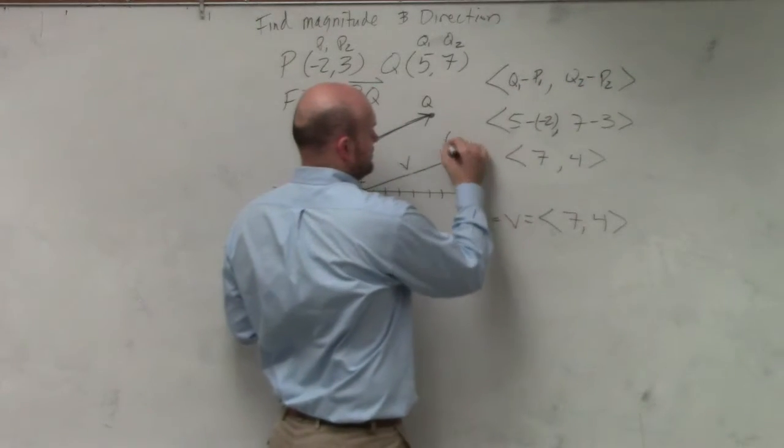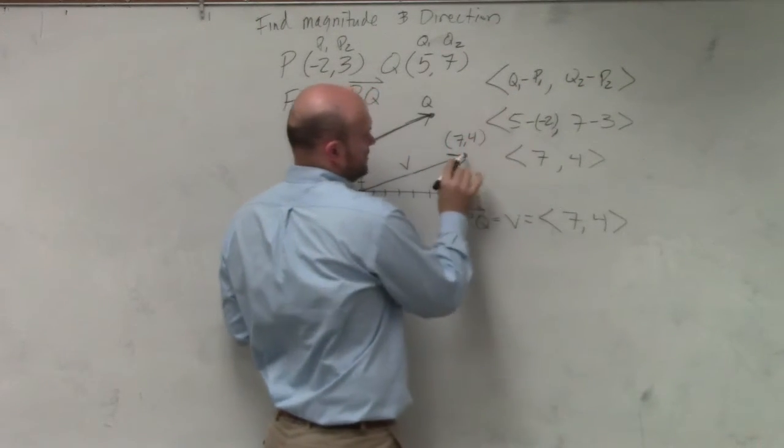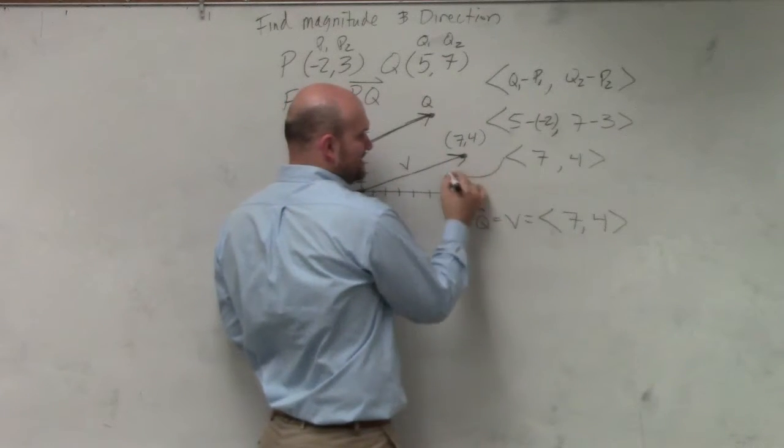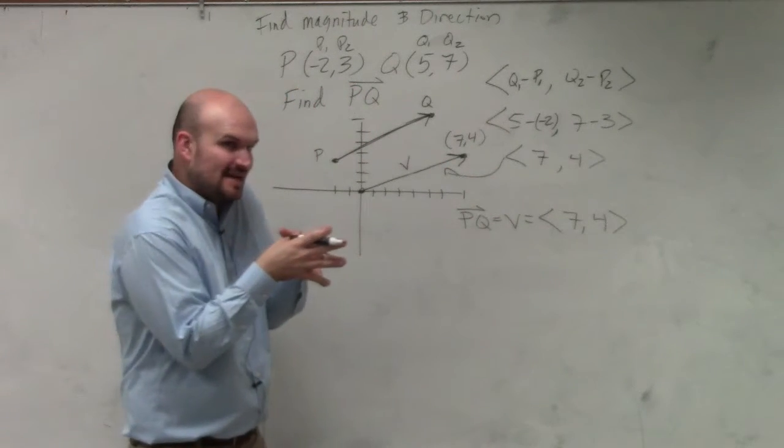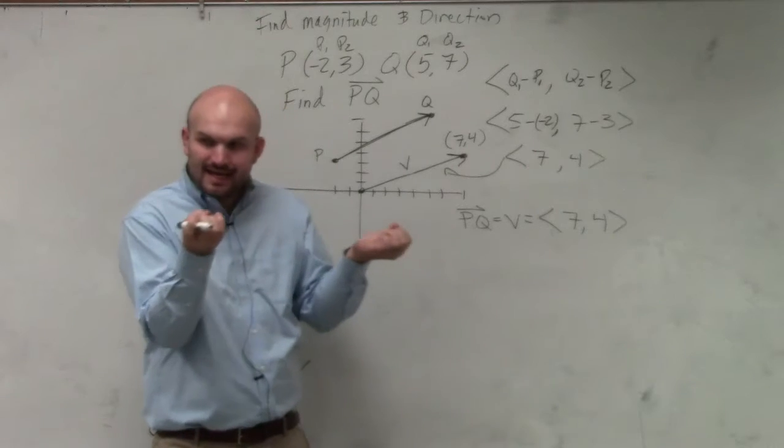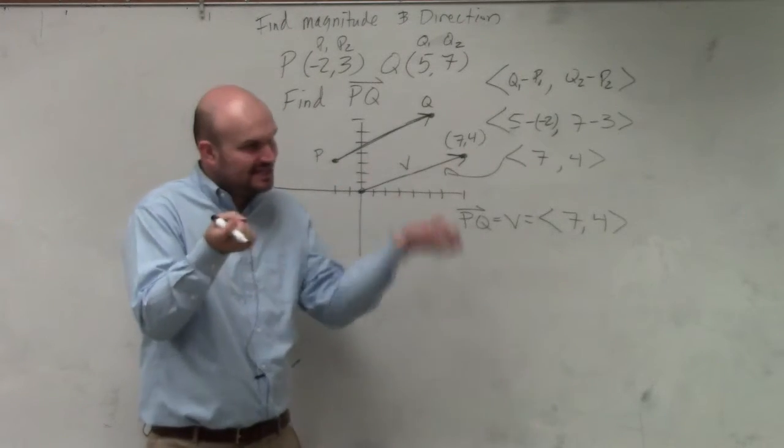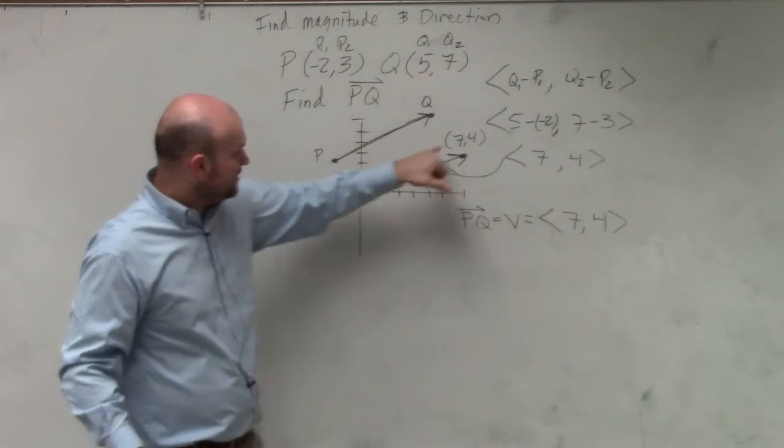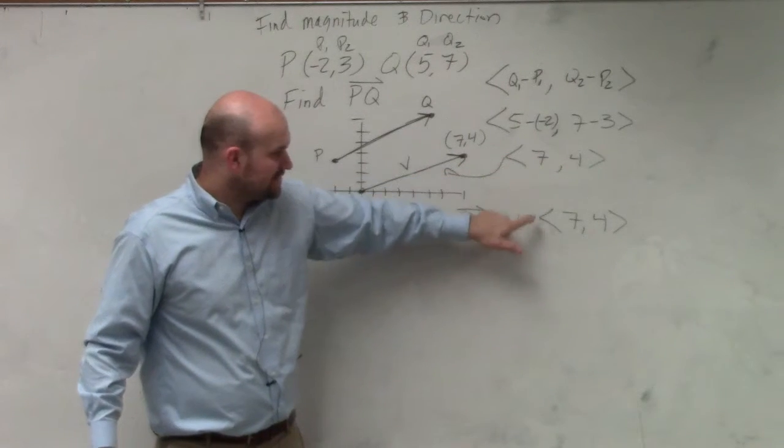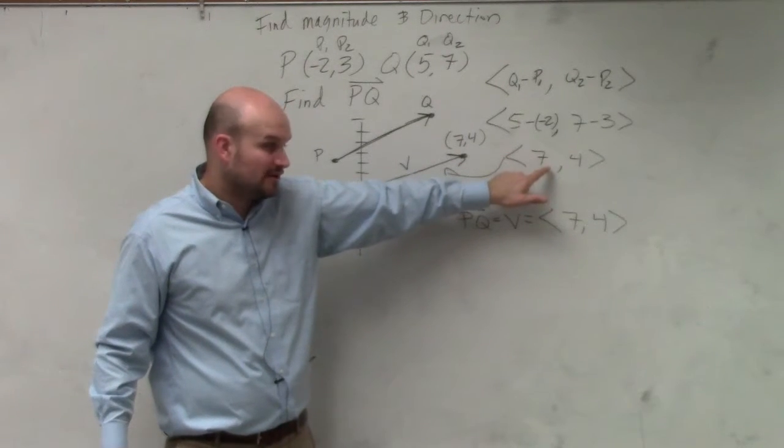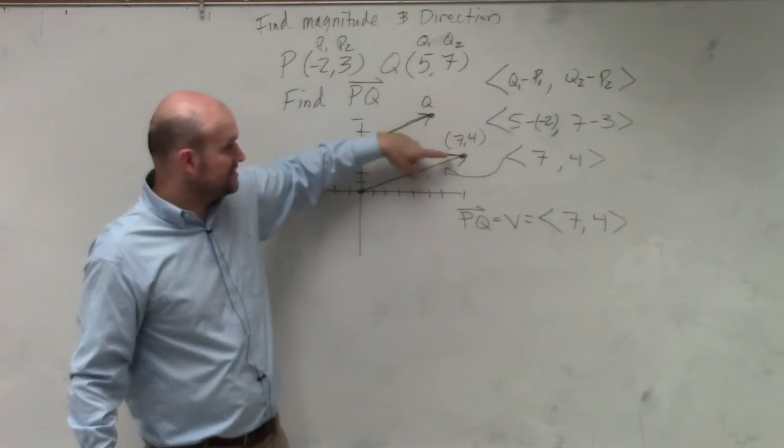A coordinate point looks like that. This is a vector, a directed line segment. Has a starting and an ending point, right? Initial and terminal. It starts here, ends there. That's the vector V, 7 comma 4, in component form. 7 comma 4 is just a coordinate point.